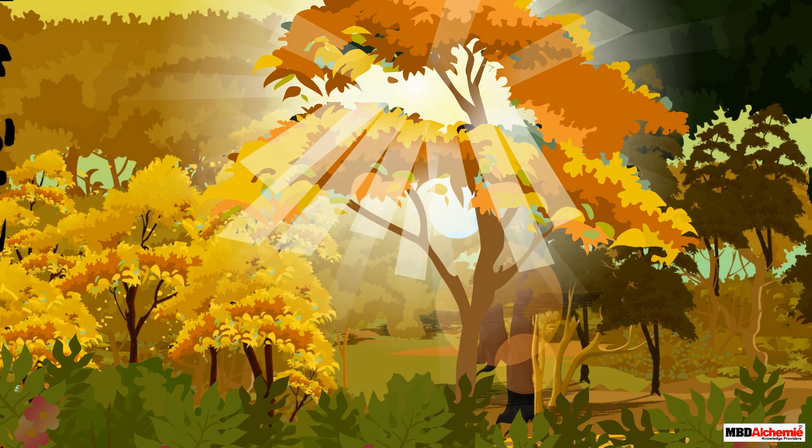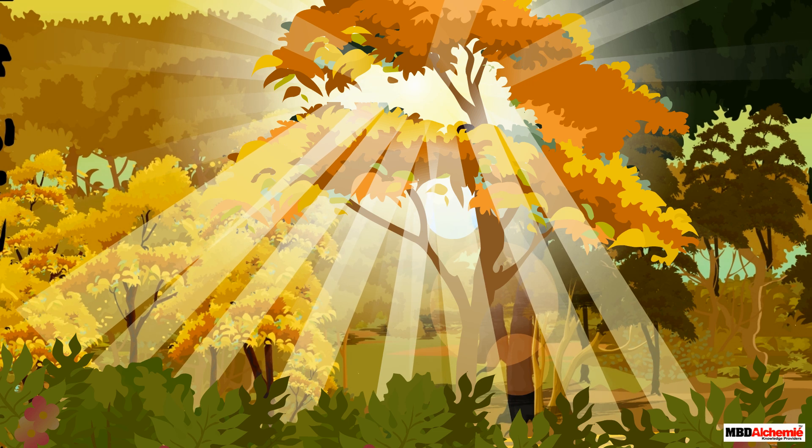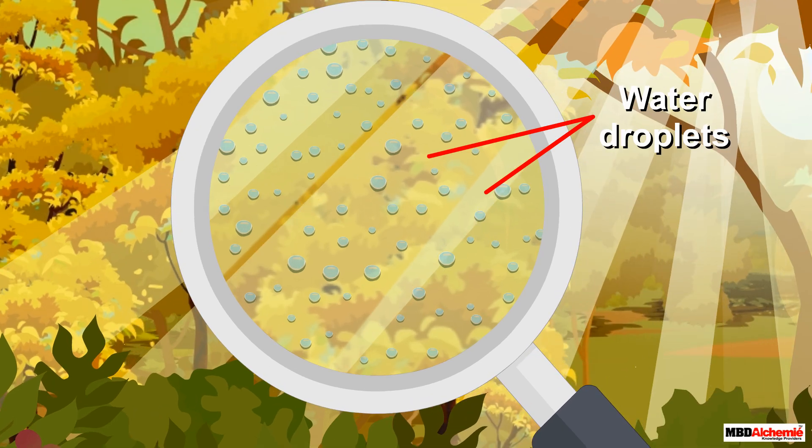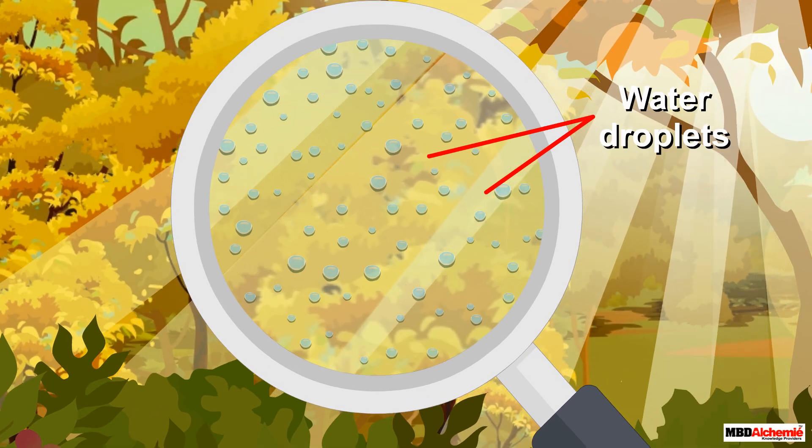The same effect can be observed when sunlight passes through the trees of a dense forest. Here, tiny water droplets in the mist scatter the light.